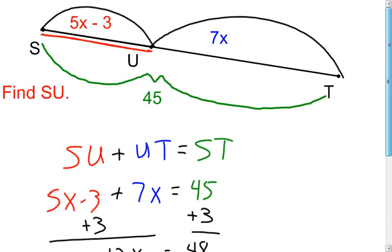Now be careful because notice it said find the length of segment SU. X equaled 4, but I want the length of segment SU. So now I come back and I know the length of segment SU is 5X. Well, I just found out that X is 4, and then I have to subtract 3. So I have 20 minus 3, the length of segment SU is going to equal 17 units.